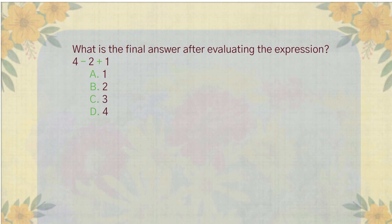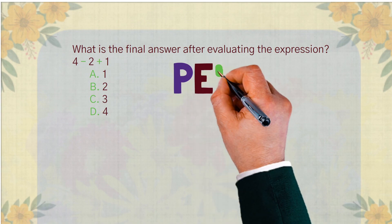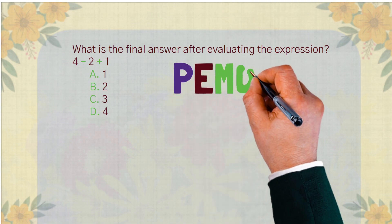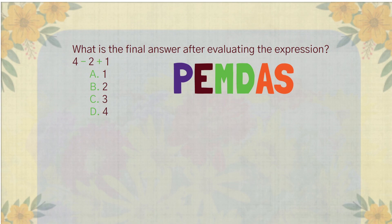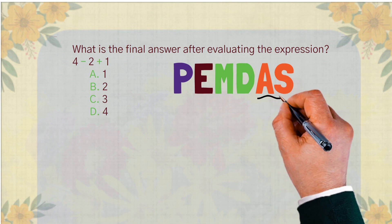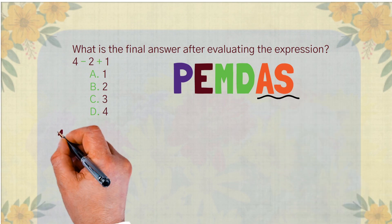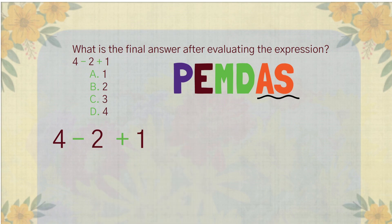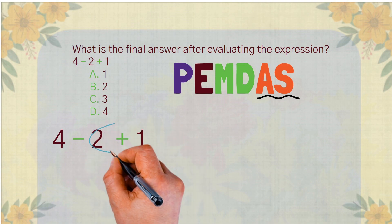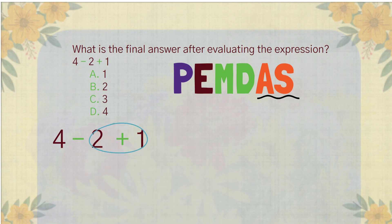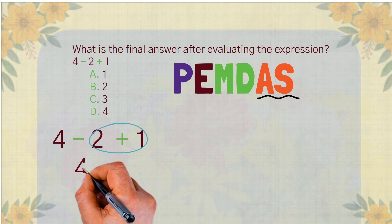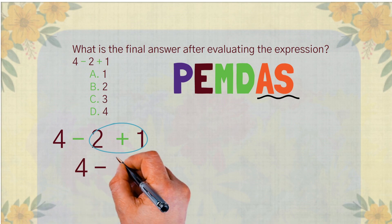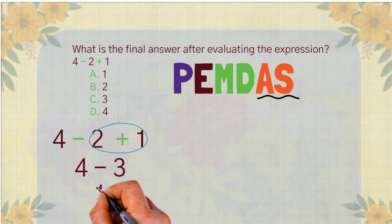A common mistake people make with this type of problem is thinking subtraction must always come before addition just because subtraction comes later in PEMDAS. Let's take a look at how some might solve it incorrectly. They see 4 minus 2 plus 1 and think they need to add 2 and 1 first, which equals 3, then subtract 3 from 4, resulting in 1 — which is incorrect.